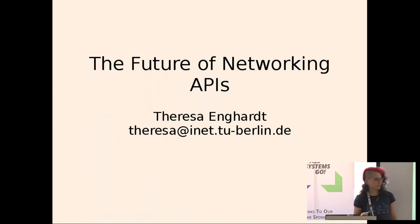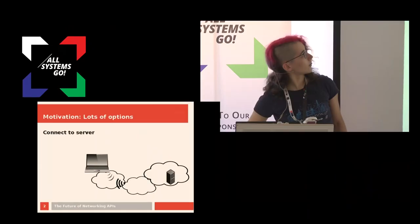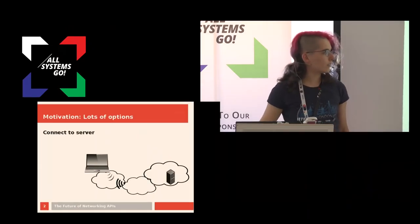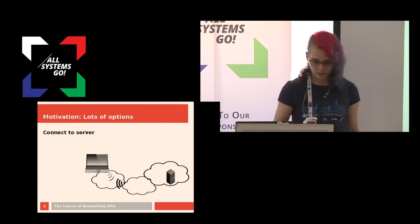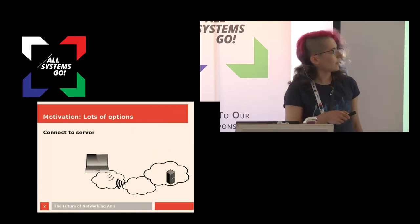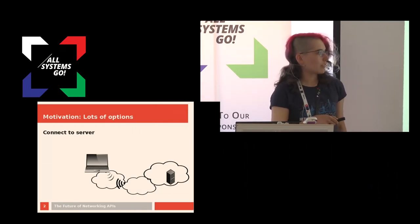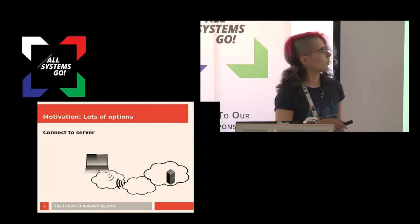Why do we need a new networking API? It is because networking is actually pretty complicated. Let's assume we are the laptop here, and it wants to connect to the server through a network, and it's connected to the Wi-Fi via some local access point.